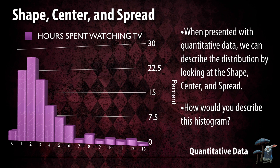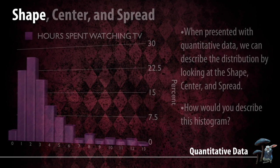Do we say the middle is two, or do we say the middle is more around six? What's the shape? Is it spread? How would we describe how much it's spread out — do we say it goes from zero to 13? All of these are valid ways, but there's a lot more than just those simple elements.